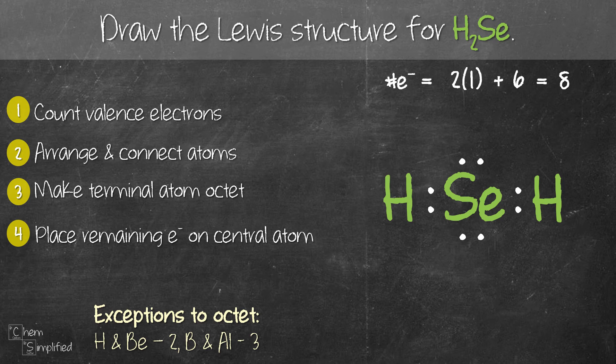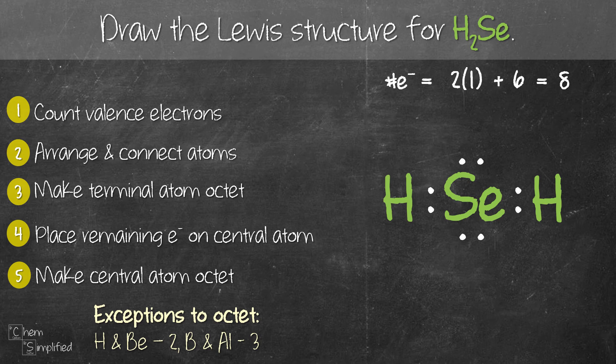And final step, we need to make sure that our Se is octet. Since our Se already has eight electrons and we've already used up all our electrons, we're pretty much done drawing the Lewis structure for H2Se.